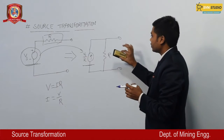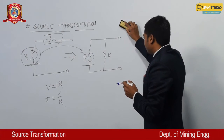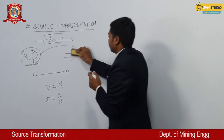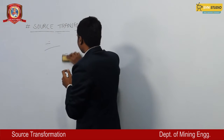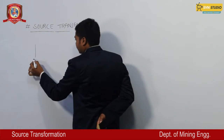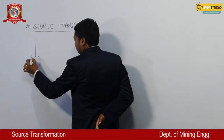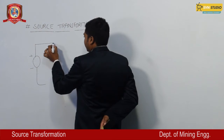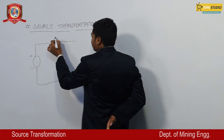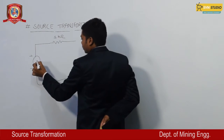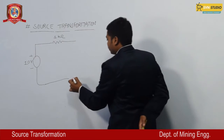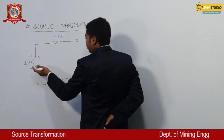This is the fundamental concept of source transformation. Now we are going to see one or two numerical problems in this section. Suppose there is given a voltage source of a certain value connected in series with a certain resistance — let us suppose it is 1 kilo-ohm and the voltage is 10 volts. Now we need to convert it from a voltage source to a current source.